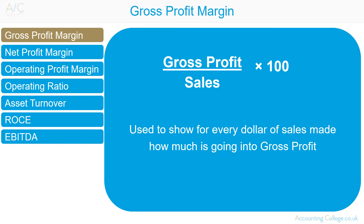Gross profit margin is affected by only a small number of variables, such as selling price, sales mix, purchase costs, and production costs.